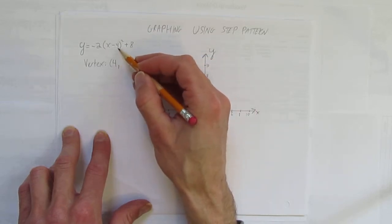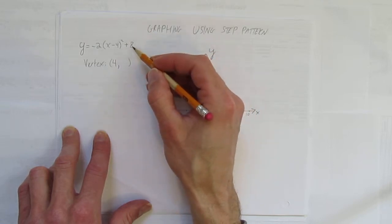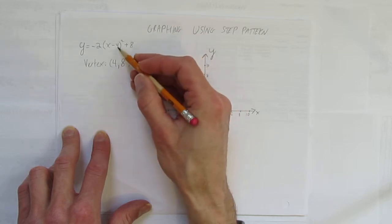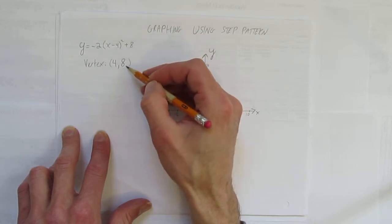It's called the h value. And then the k value just stays as it is, 8. So the vertex of the parabola you see here is 4 comma 8.